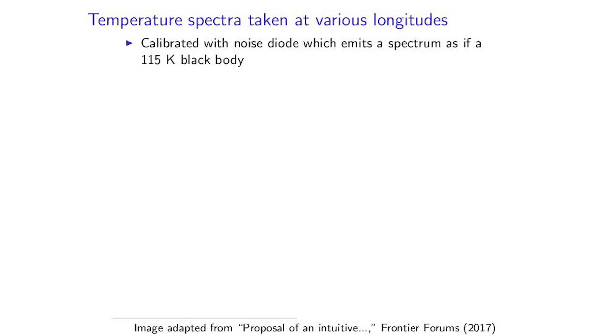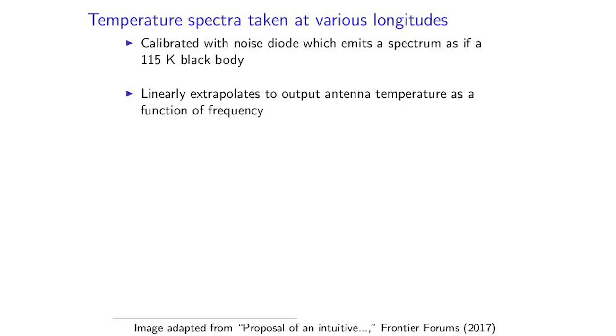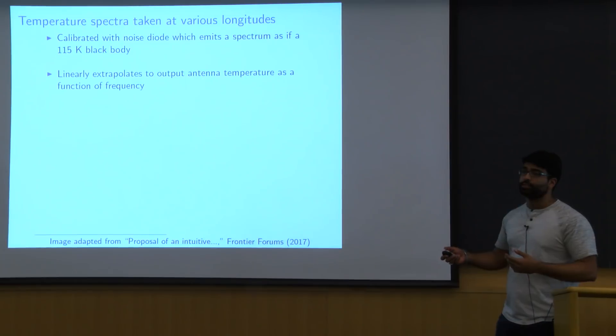And so in order to turn this into temperatures is what we'll be dealing with, we're going to first have to calibrate this with a noise diode. What this will do is just send a signal to the feed horn that looks like 115 Kelvin black body all throughout the sky. And so it uses the signal it sees from this to extrapolate other signals that it'll see. So basically if later on it sees a signal that's twice as strong as the signal it saw in its calibration at some specific frequency, then it says there must be a 230 Kelvin black body at that specific frequency. So at the end we'll be getting some sort of temperature profile as a function of frequency.